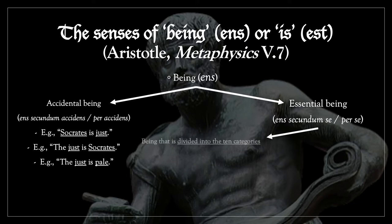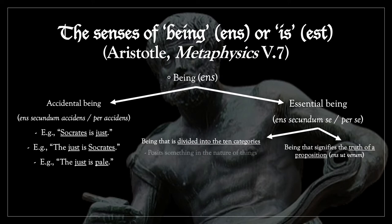Essential being is divided into being that is divided into the ten categories, and being that signifies the truth of a proposition. This is often called in abbreviated form by the Latin phrase 'ens ut verum', or being as true.